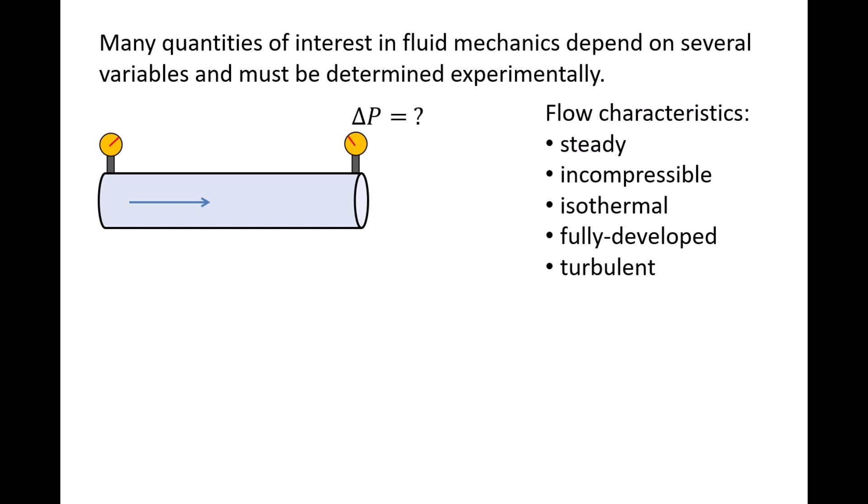What variables might impact the pressure drop? Well, based on experience conducting experiments with these types of flows, we might guess that the length of pipe l, the flow speed v, the pipe diameter d, the absolute roughness of the pipe epsilon, and the fluid properties density rho and absolute viscosity mu are important.